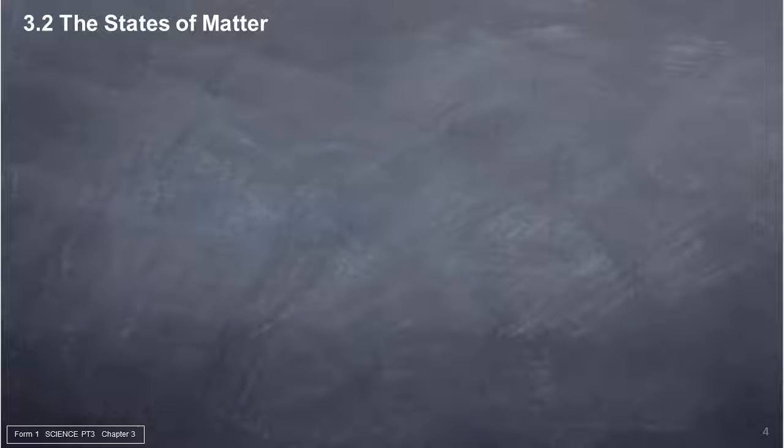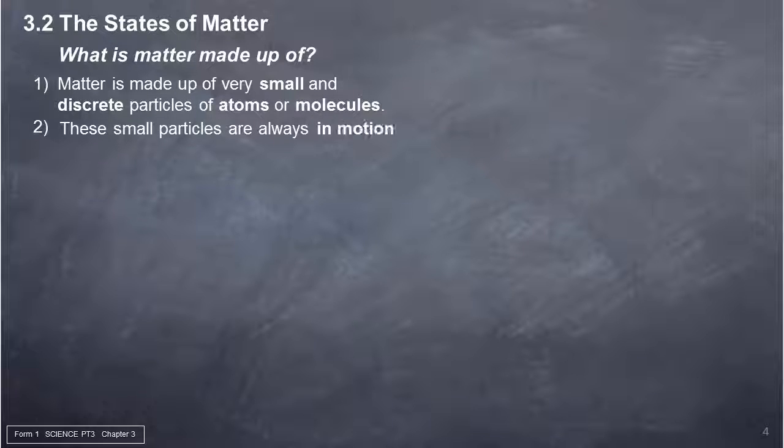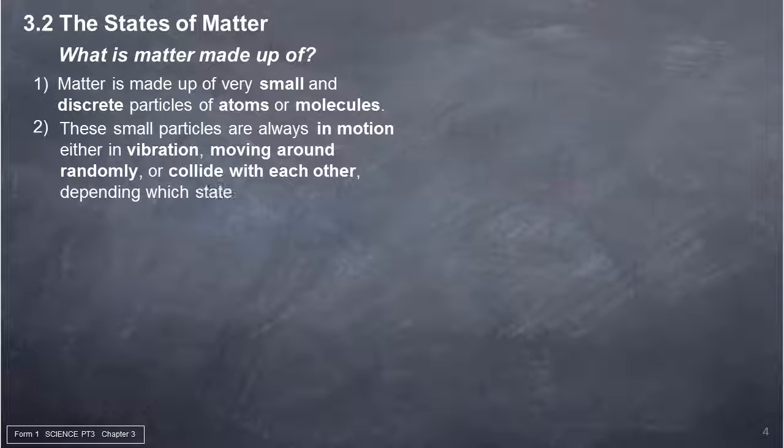3.2 The states of matter. What is matter made up of? 1. Matter is made up of very small and discrete particles of atoms or molecules. 2. These small particles are always in motion either in vibration, moving around randomly, or colliding with each other, depending which state they are in.